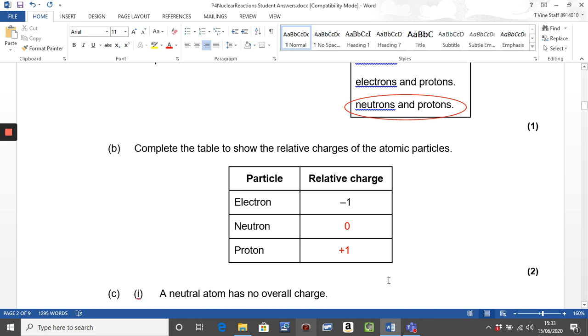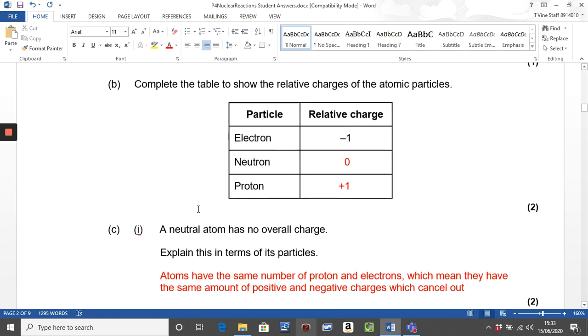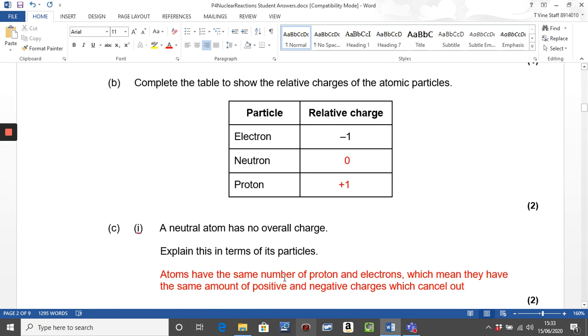Now this question is actually harder than it looks. A neutral atom has no overall charge. Explain this in terms of its particles. Now you need to understand that they need you to identify number of particles and the charge on the particle. So they have to have the same number of protons and electrons, which mean they have the same amount of positive and negative charge which cancel out. You'll notice I've used same number of my atomic particles, same amount of charge, but opposite charges that cancel out. You can't expect to get two marks if you don't mention both points.